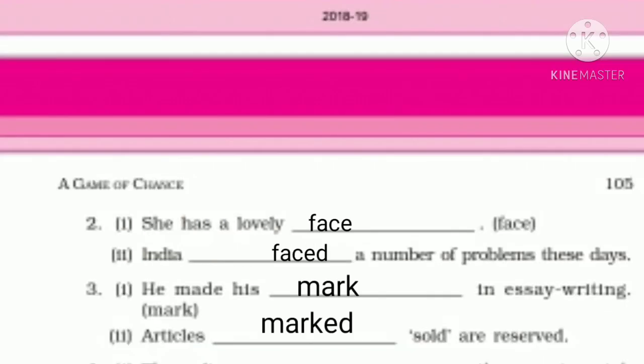Second sentence: 'She has a lovely dash.' The word given is 'face.' Here it is used as a noun, so we write 'face.' And in the next sentence, 'India dashed a number of problems these days,' it will be 'faced' as a verb.